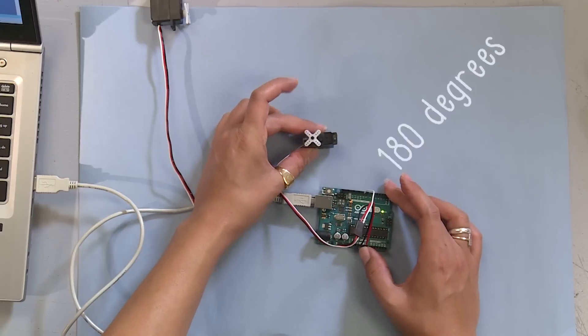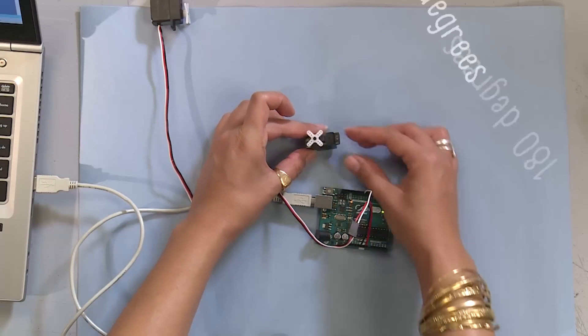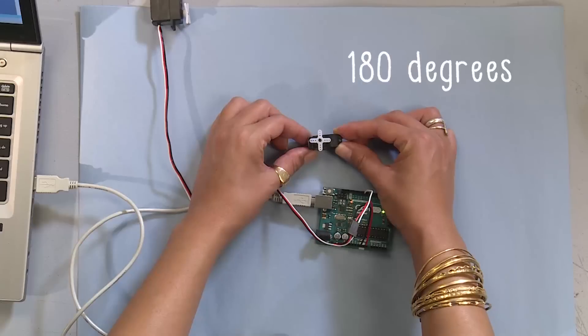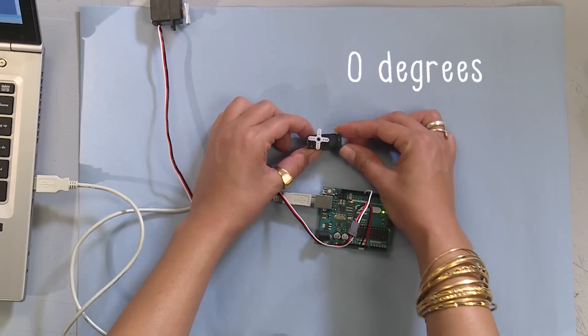Then plug in the small servo to see how the same code behaves differently depending on what servo you use. So this servo goes to position 180, then 0, then 180, then 0. How do I know it's 0?